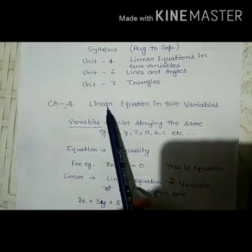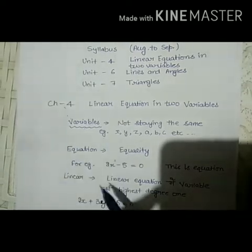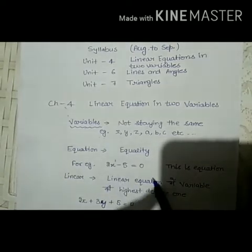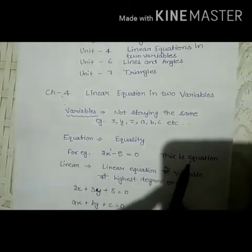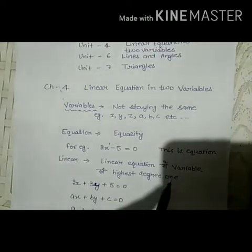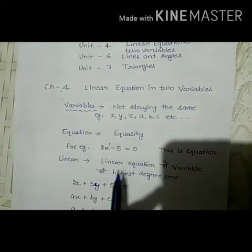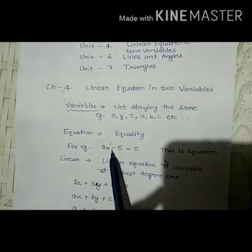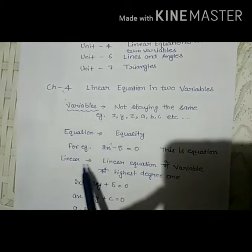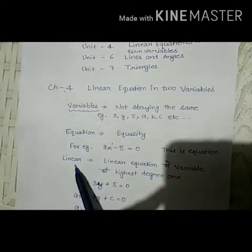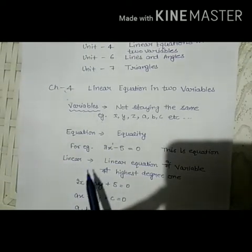Linear means what? Linear equation means the highest degree is 1. For example, in this equation the highest degree is 1, so it is called a linear equation.